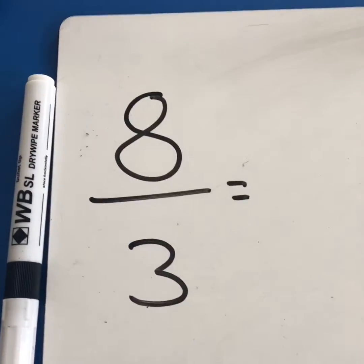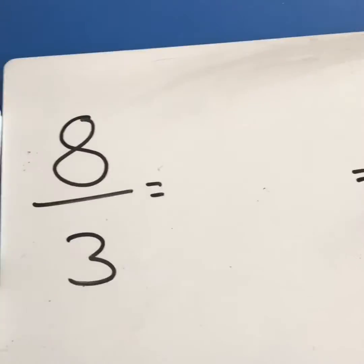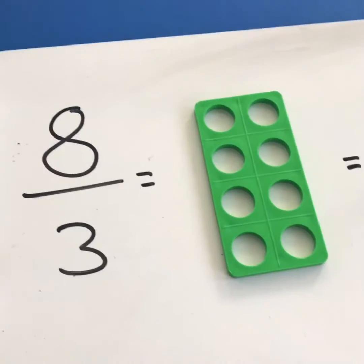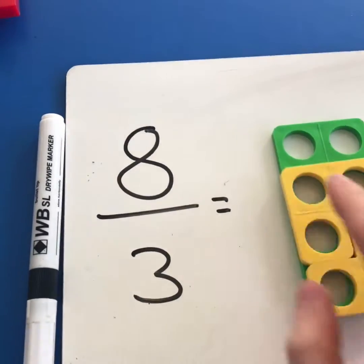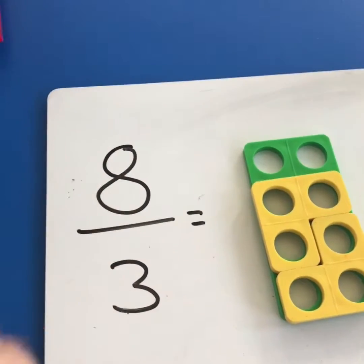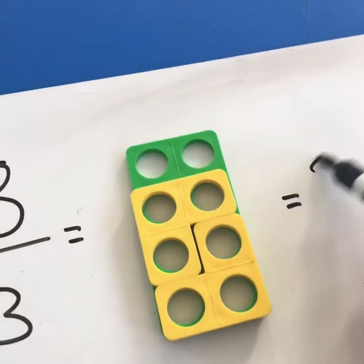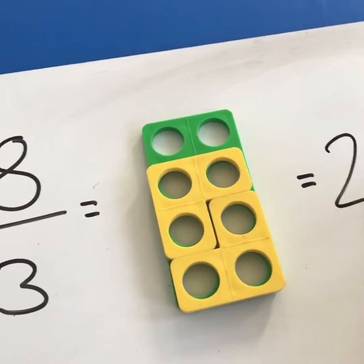For breaking down improper fractions, it's a great idea to use some numicon. So you can say we have eight as our numerator, and then how many holes fit into eight? Well, we've got two holes remainder two, so we've got two and two thirds.